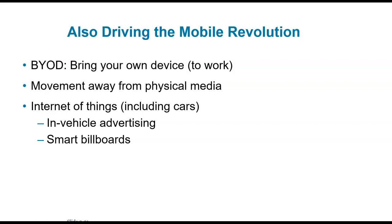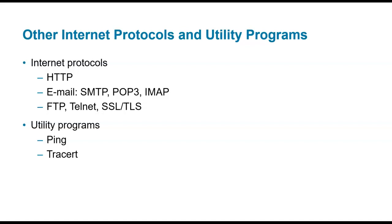There are other protocols you need to know that enabled important things on the internet. HTTP — Hypertext Protocol — gave us the ability to create universal webpages. Email servers use standards like SMTP, POP, or IMAP, meaning no matter what email client you have, we can exchange email. File Transfer Protocol (FTP) allowed people to establish sessions to exchange files online before fast internet connections. Secure Socket Layer (SSL) enables more secure communications, which we'll cover in the security chapter. Utility programs like ping and traceroute allow you to track how traffic moves across the internet.